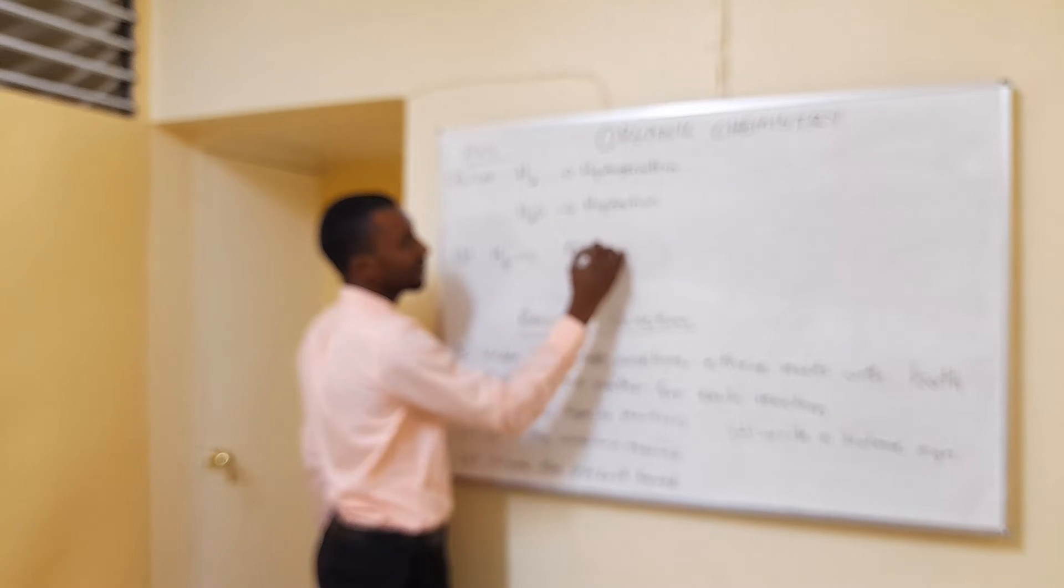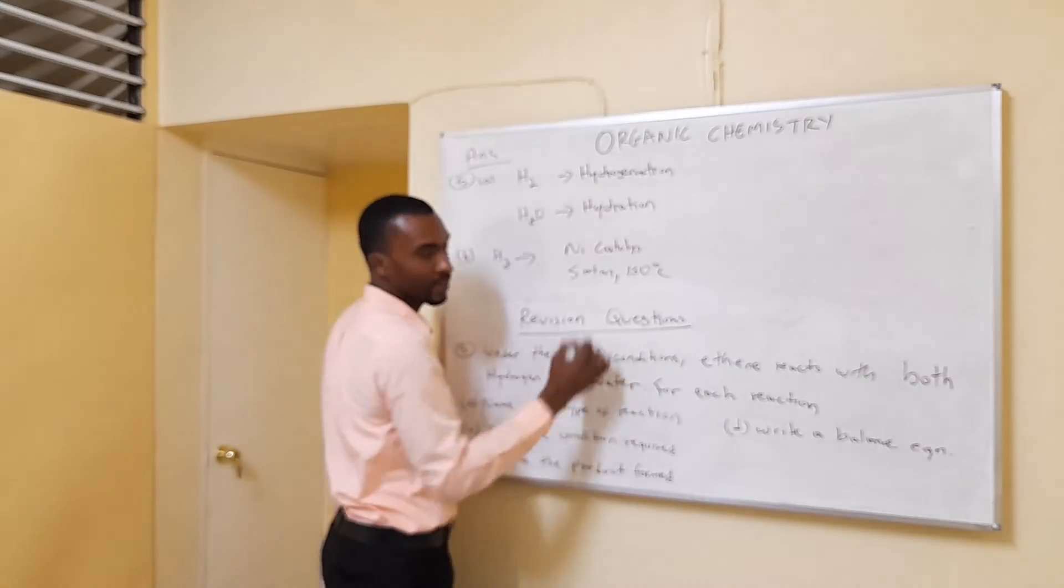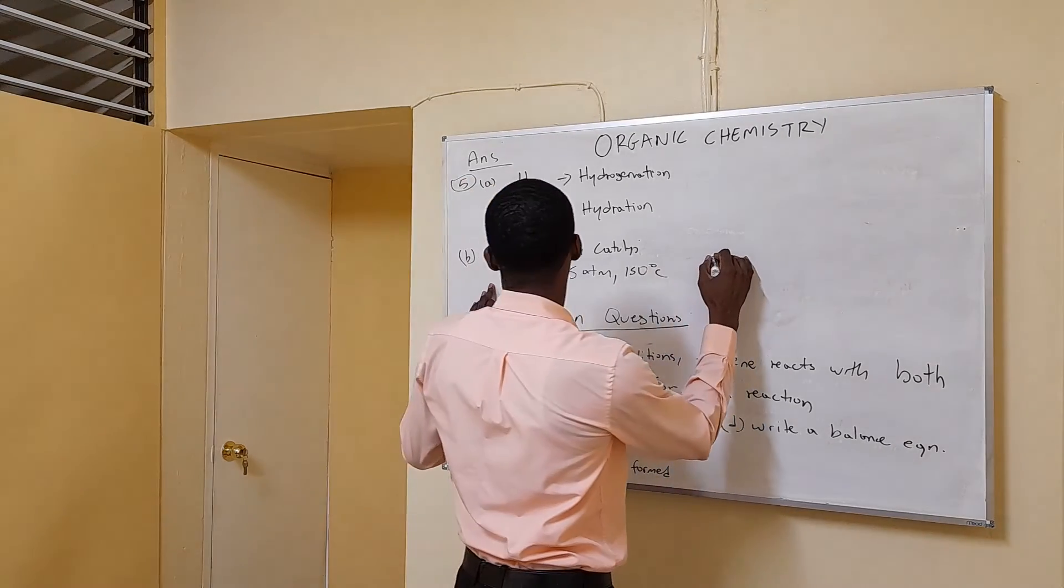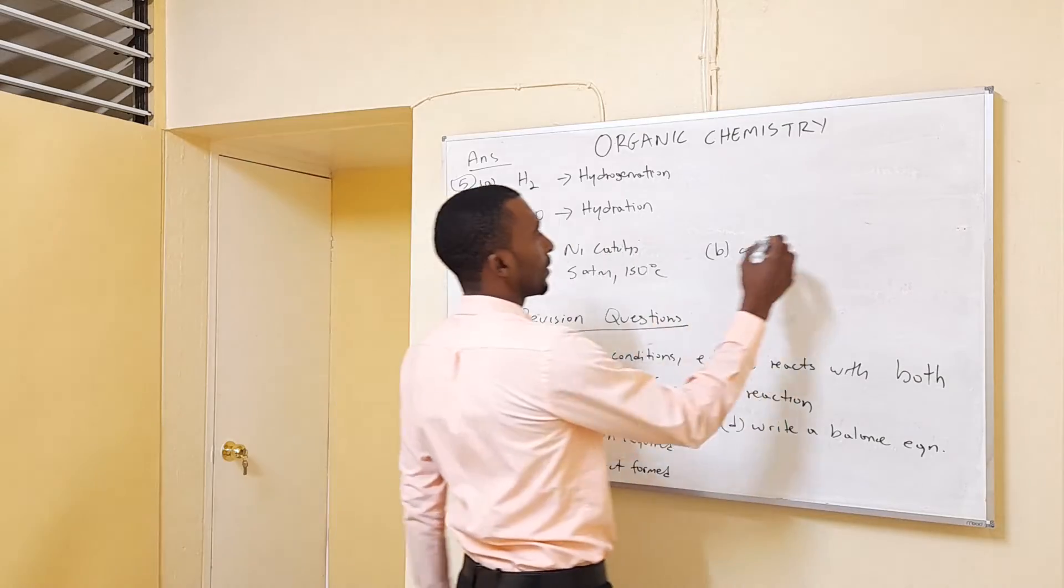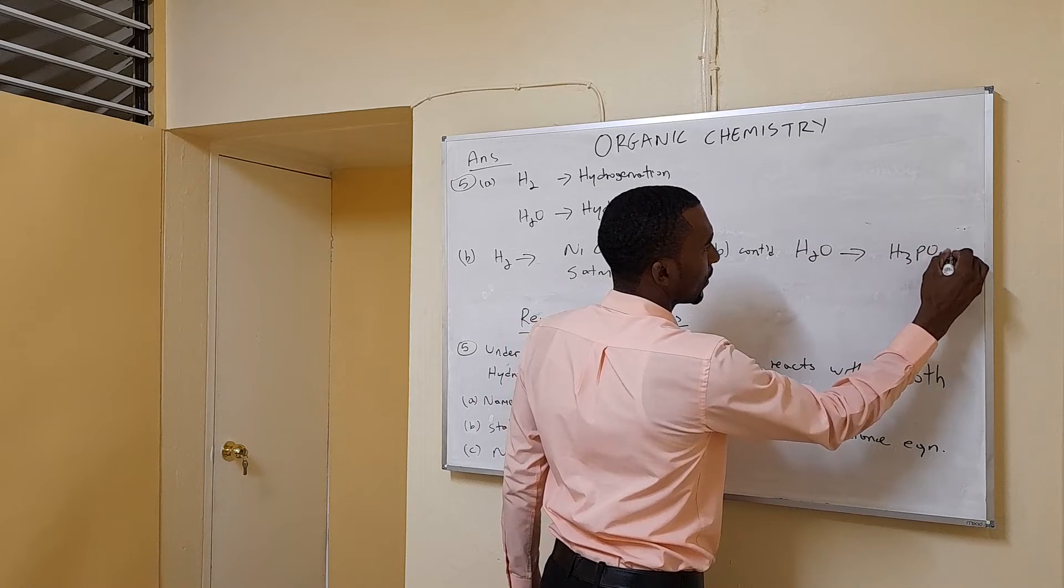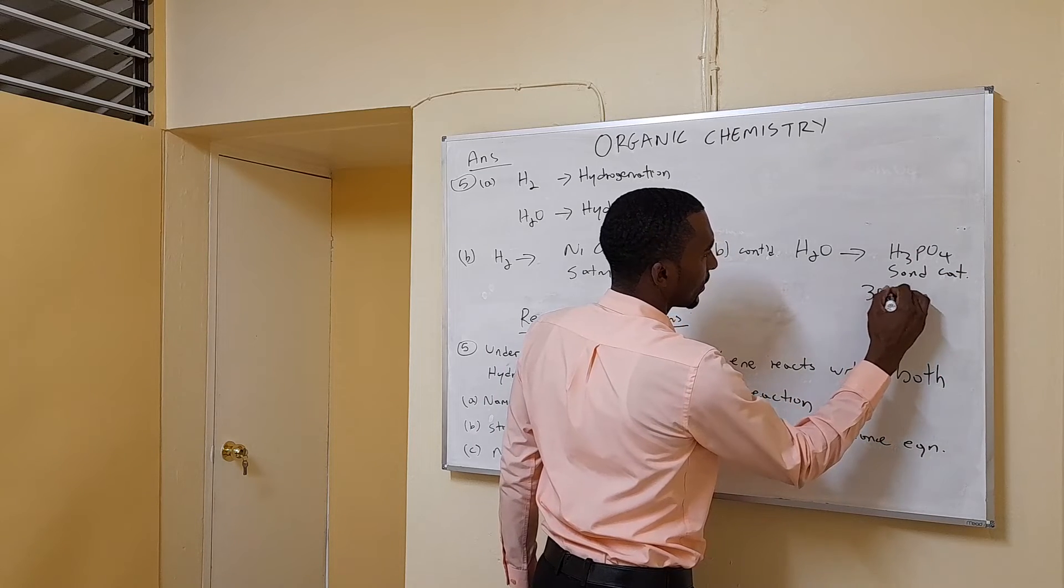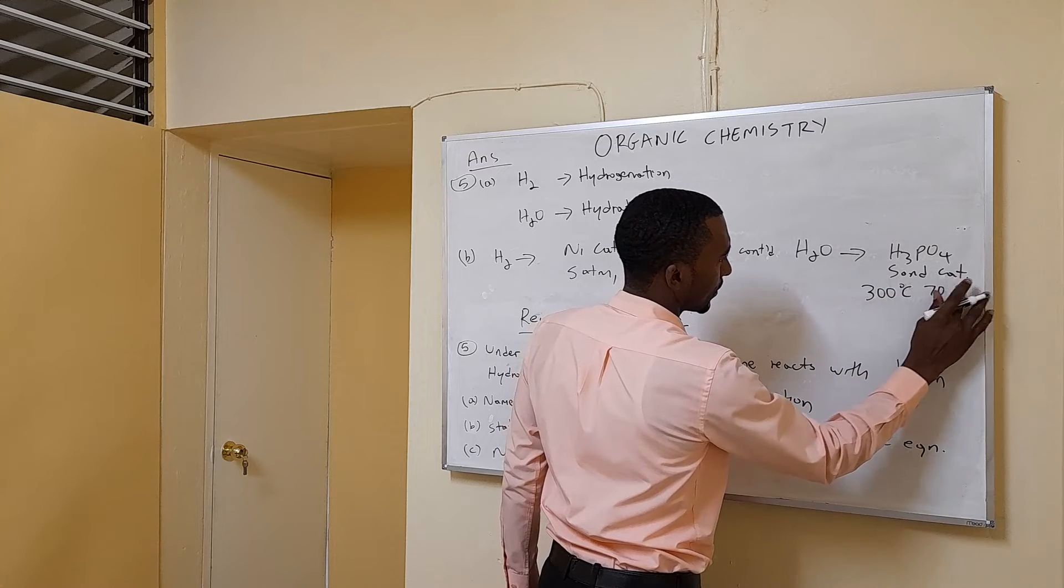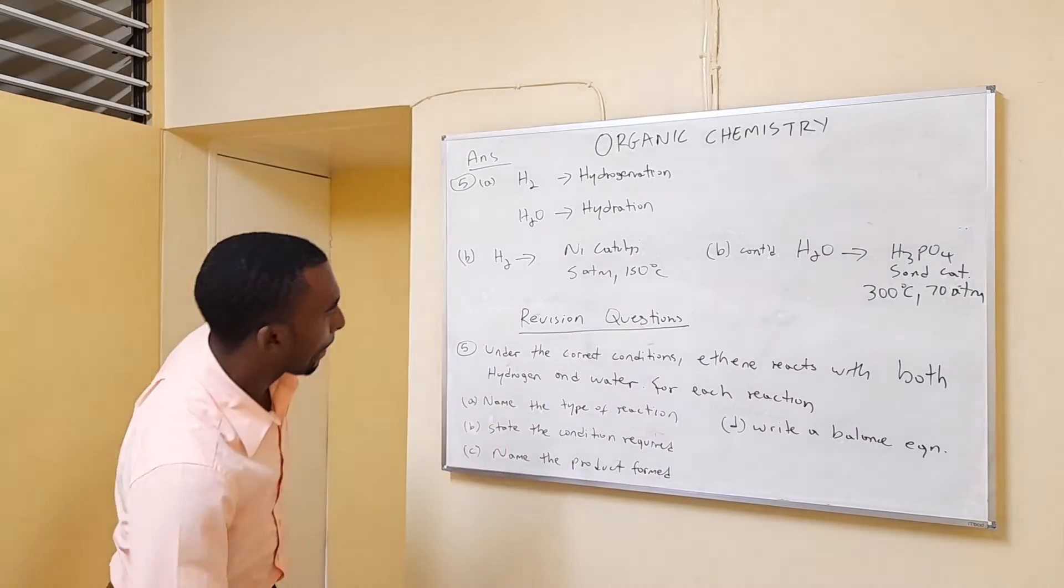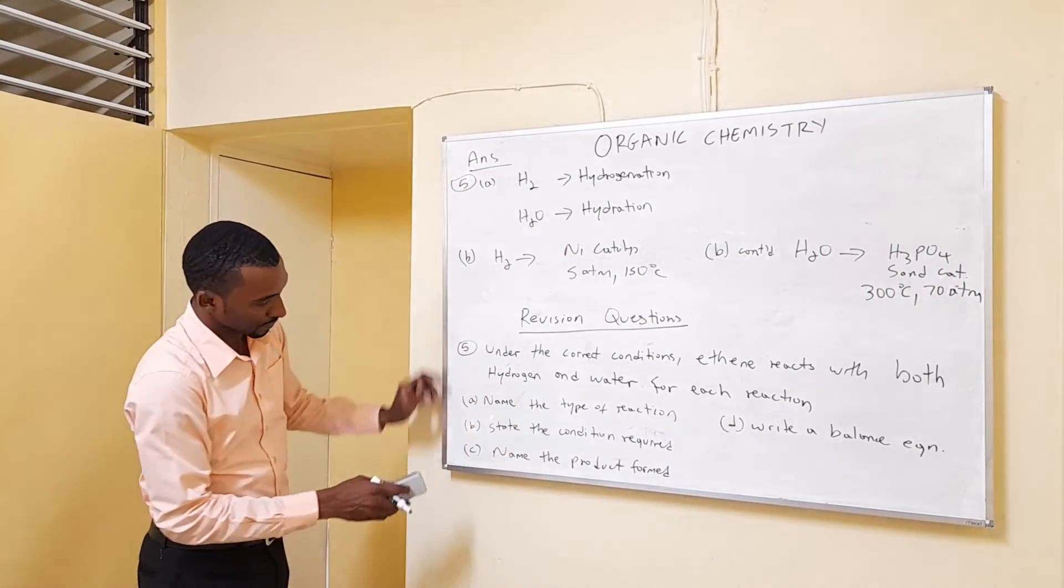State the conditions required. For the hydrogenation, nickel catalyst, I believe it's 5 atmosphere, 150 degrees Celsius. And the hydration is a harsher condition. For the water, it's H3PO4 as a catalyst, and we need 300 degrees Celsius and about 70 atmospheres. That's what's in the book. These are for memorization - you just have to do them over and over until you remember them.